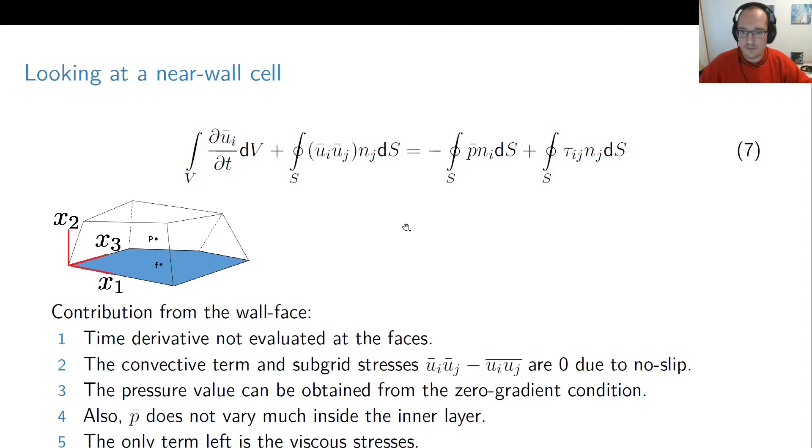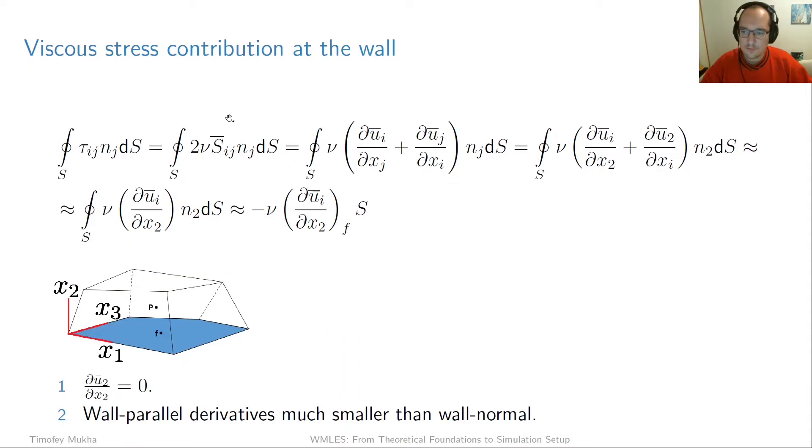Let's look at that term in more detail. So the first thing we want to do is simply to plug in the definition of tau ij. Recall that we said that the subgrid stresses are going to be zero at the wall so the only thing which is left is the viscous stress component. So 2 times nu times sij. Then finally we can plug in the definition of sij as well giving us the following expression.